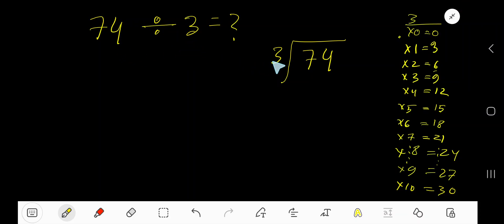74 divided by 3. Here 3 is a divisor, so we need the multiplication table of 3. 3 times 0 is 0, 3 times 1 is 3, 3 times 2 is 6, 3 times 3 is 9, 3 times 4 is 12, 3 times 5 is 15.